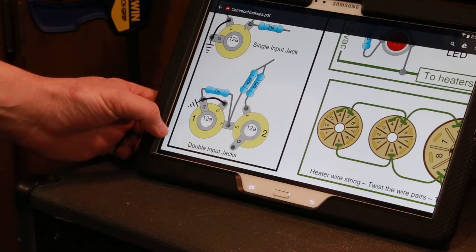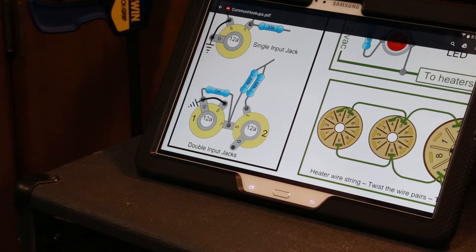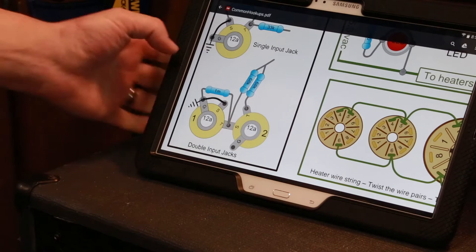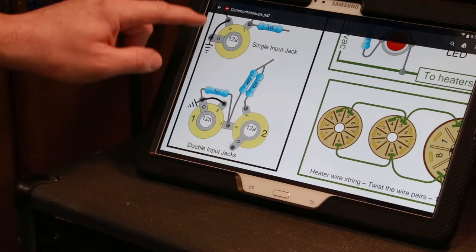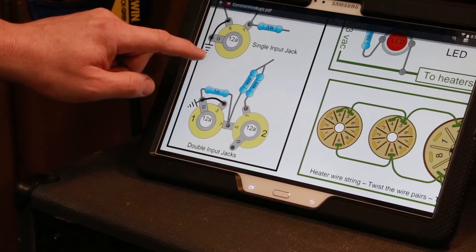One of the things I was going to talk about that I mentioned is the way the input jacks get wired up. So this is one of Doug Hoffman's other pages that is good for pretty much any amp you're building. It's called his common hookups file. It's a PDF.